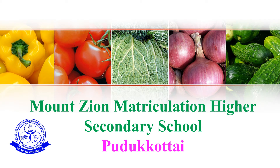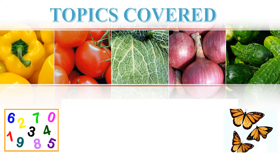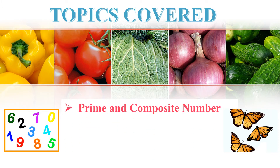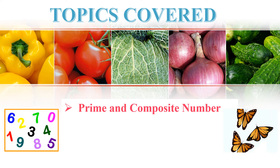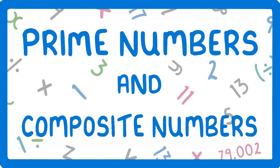Hi children, this class is for Standard 5 and the subject is Mathematics. In this class, we are going to cover Chapter 4 Factors, Exercise 4.3. Topics covered in this class are Prime and Composite Numbers, and Finding the Prime Factorization of the Given Number. Today, we learn Prime and Composite Numbers.